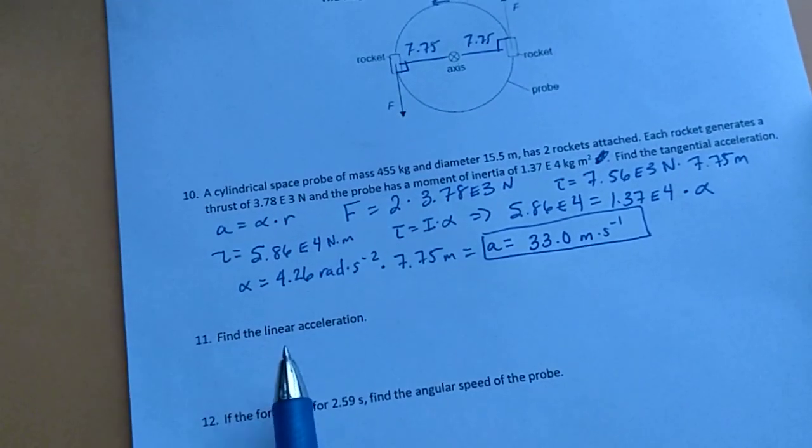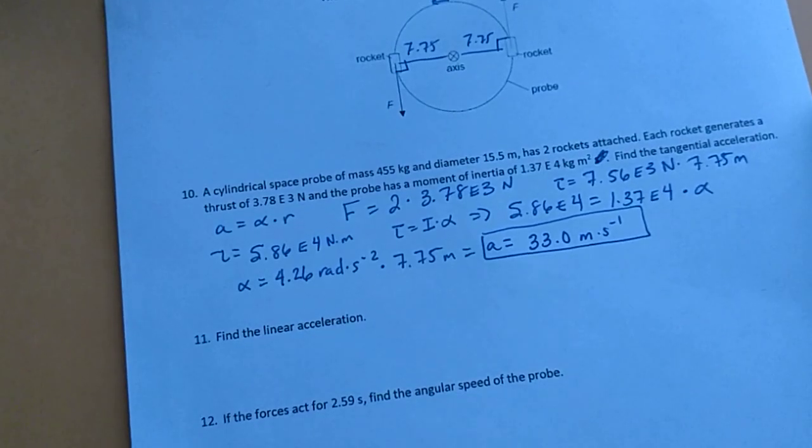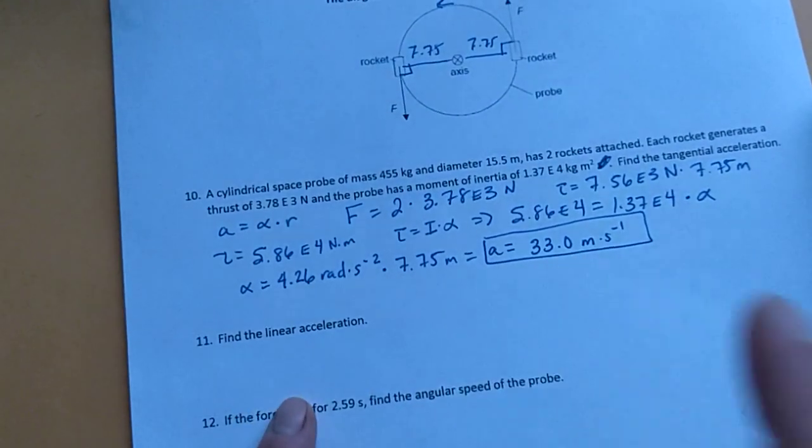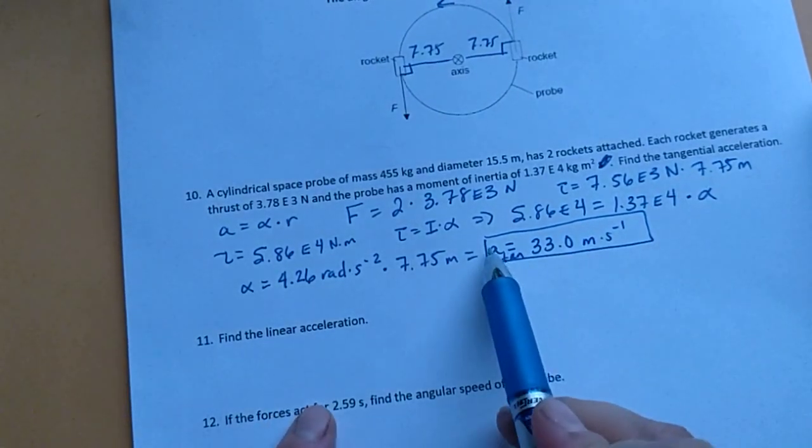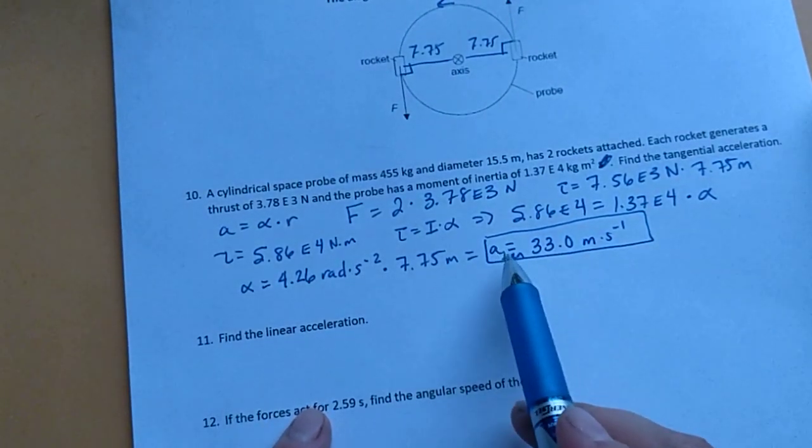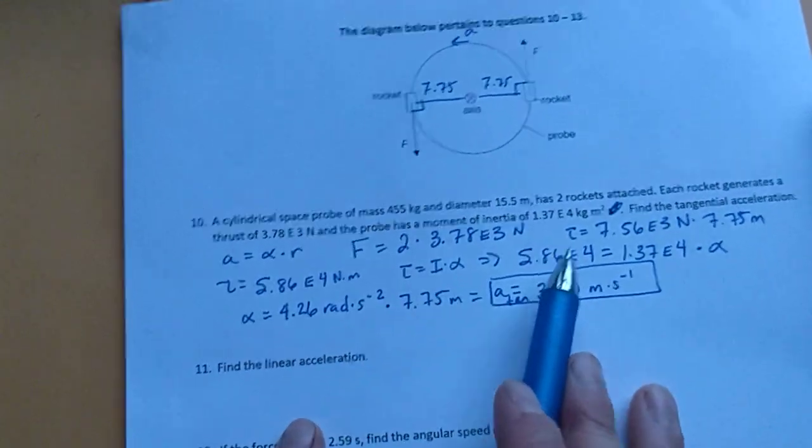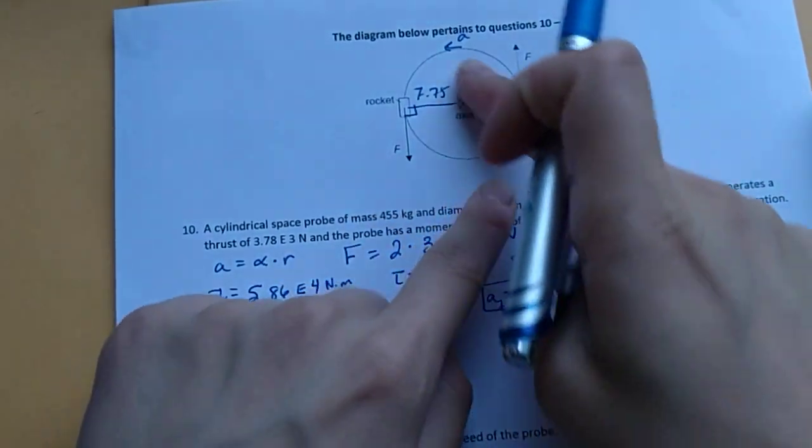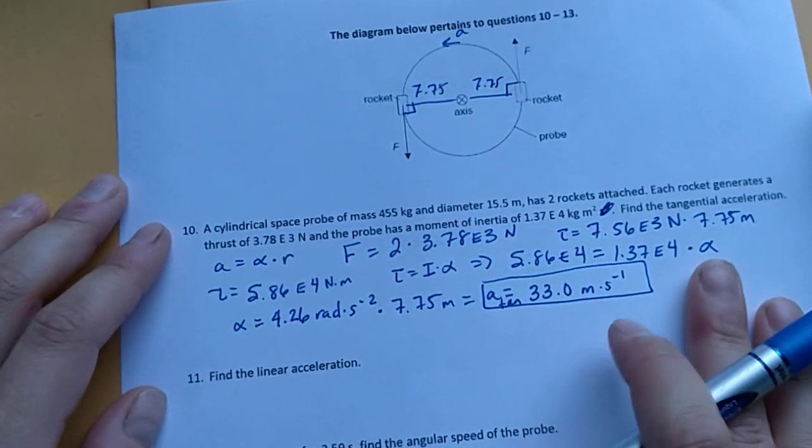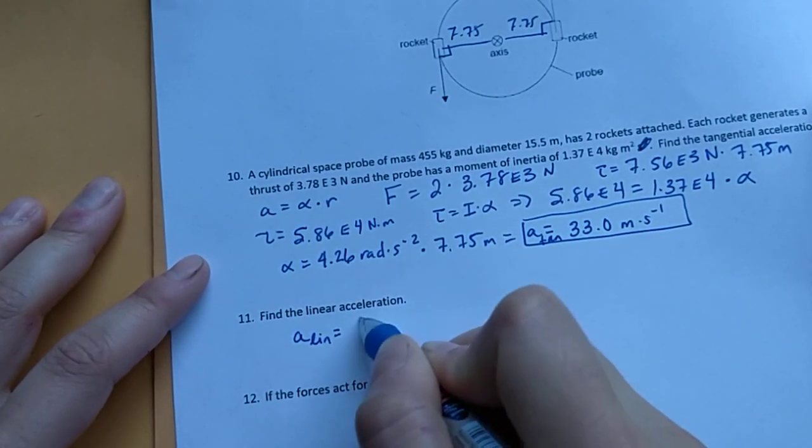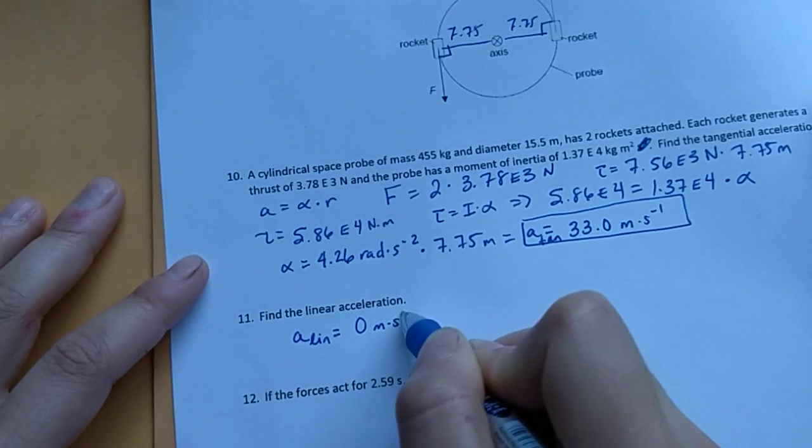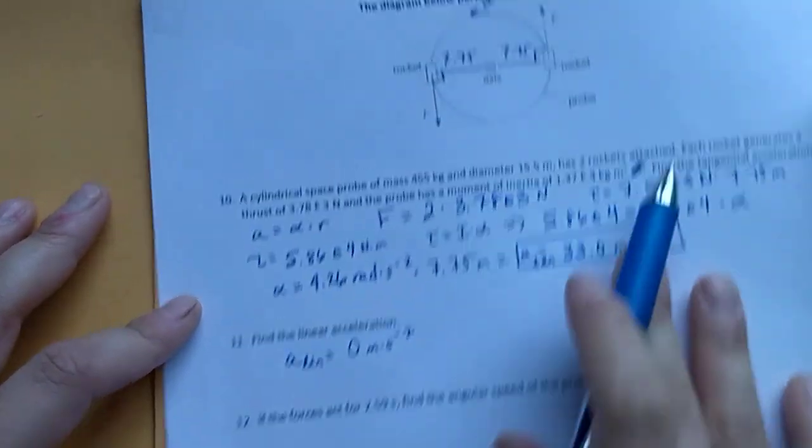Now we want the linear acceleration. So this is a case where the linear acceleration is not the same as the tangential acceleration. So I'll note that this is the tangential by a tan. Does this object translate linearly at all? No. So the linear acceleration, a linear, is 0 meters per second squared. It's not translating.